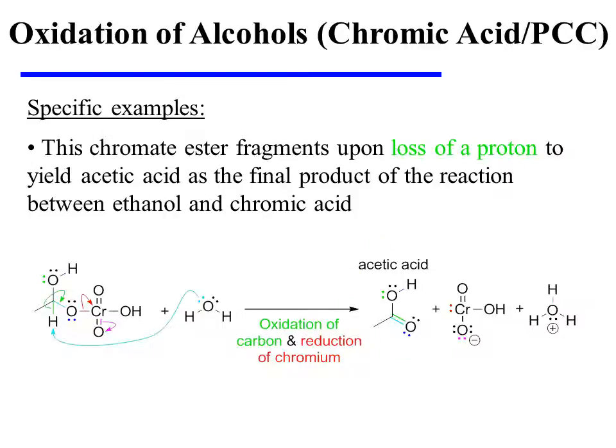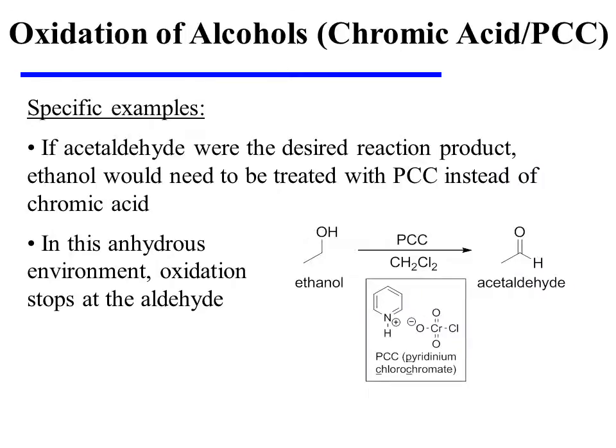Notice that a primary alcohol substrate has yielded a carboxylic acid product when treated with chromic acid. If acetaldehyde were actually the desired reaction product, then ethanol would need to be treated with PCC instead of chromic acid.